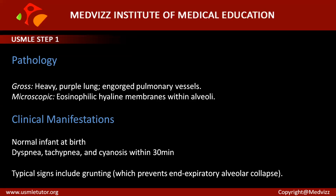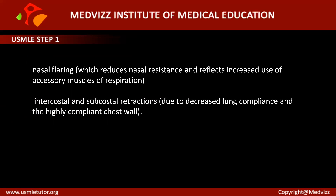The clinical manifestation is that the infant is normal at birth but develops dyspnea, tachypnea, and cyanosis within 30 minutes after birth — very important for your exam. Typical signs include grunting, which prevents end-expiratory alveolar collapse; that is the reason grunting is a predominant feature in neonatal respiratory distress syndrome.